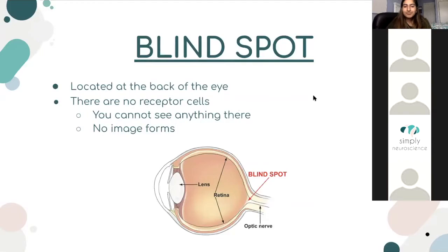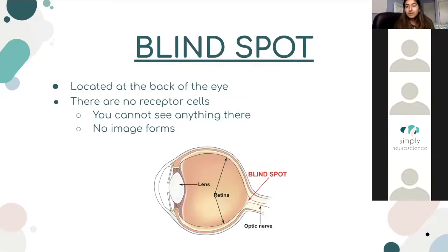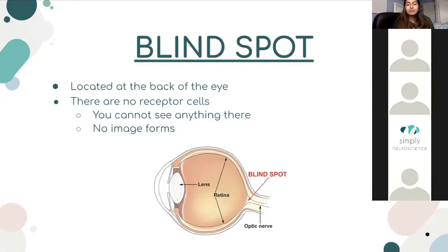My group did the blind spot. The blind spot is located at the back of the eye, and there are no receptor cells there. If an image converges on that part of your eye, you can't really perceive it. If you've ever noticed your parents or a bus driver looking over their shoulder before changing lanes, that's because they can't see what's in their blind spot. So they have to turn their head to see what's actually there before they make a move.